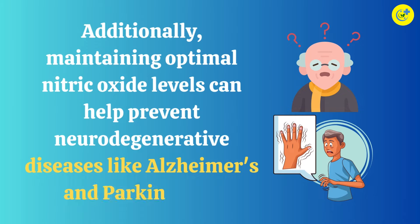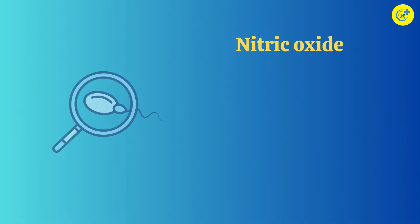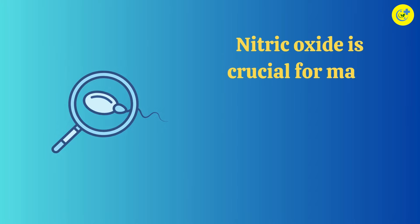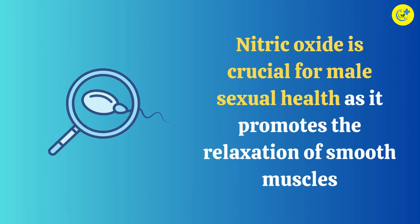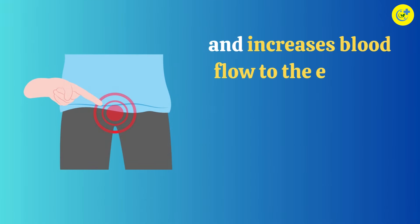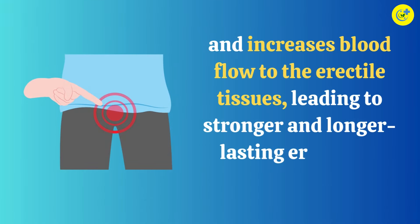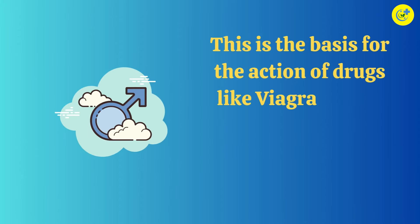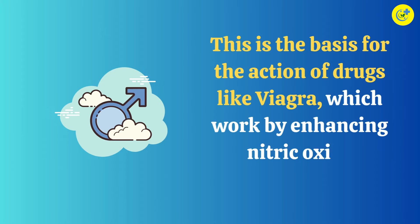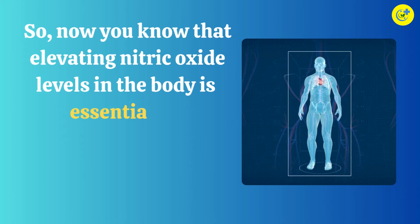Additionally, maintaining optimal nitric oxide levels may help prevent neurodegenerative diseases like Alzheimer's and Parkinson's. Erectile function: nitric oxide is crucial for male sexual health, as it promotes the relaxation of smooth muscles and increases blood flow to the erectile tissue, leading to stronger and longer-lasting erections. This is the basis for the action of drugs like Viagra, which work by enhancing nitric oxide production.